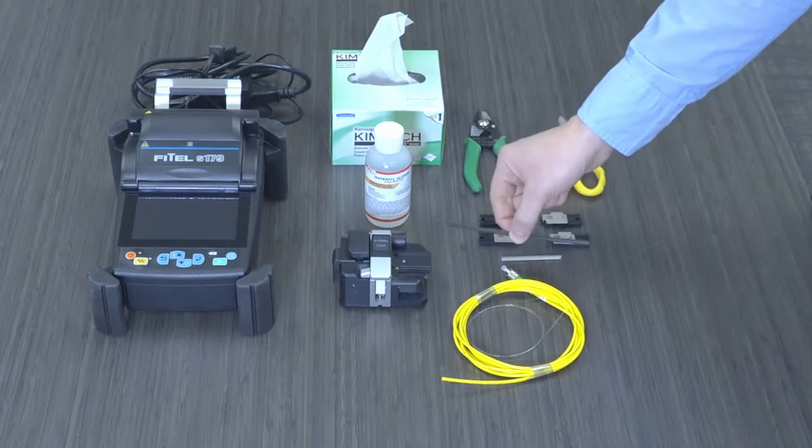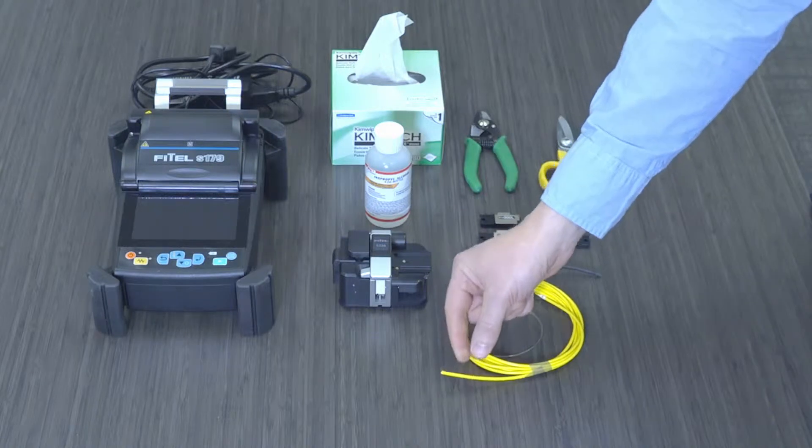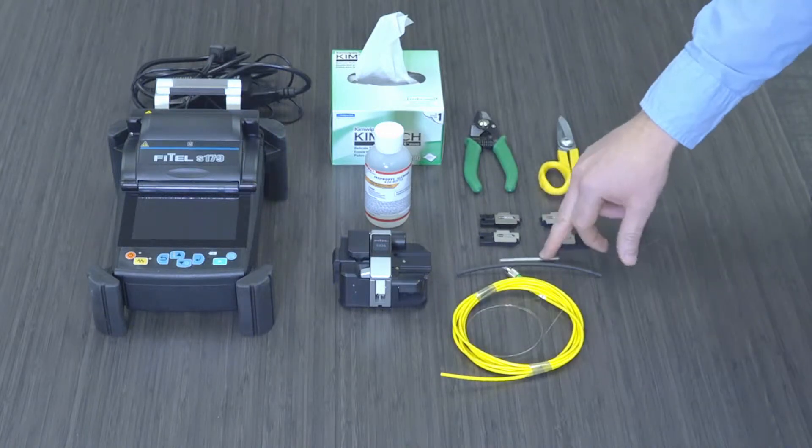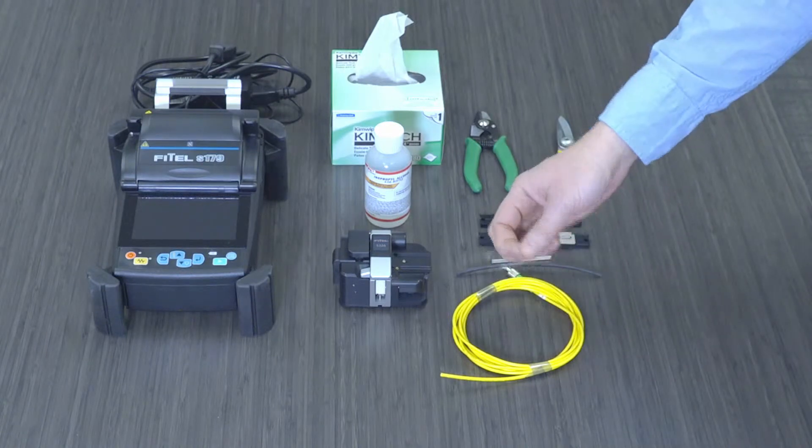We have a heat shrink which we'll use to bridge the gap between this FC-APC patch cord jacket material and this splice protector just for a little bit of strain relief, and then of course we have our bare sensor fiber.